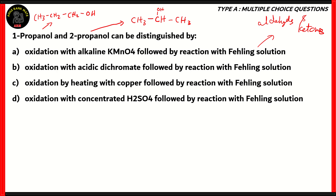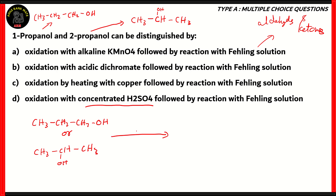The Fehling's solution is for differentiating between aldehydes and ketones. So, if we were to convert these alcohols into aldehydes and ketones, then the Fehling's solution would help us differentiate them. Now, when it comes to oxidation with concentrated H2SO4, it is a bad idea. The reason being that both 1-propanol and 2-propanol would give you the same product, which is CH3-CH=CH2, propene. This is an alkene and not an aldehyde or ketone, so it doesn't react with Fehling's solution. Therefore, option D is not the right option.